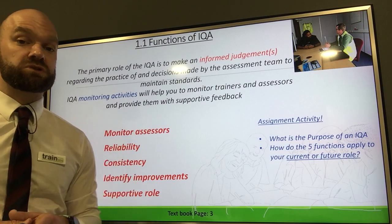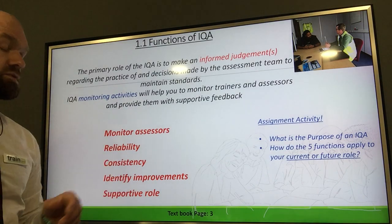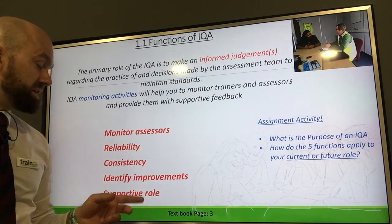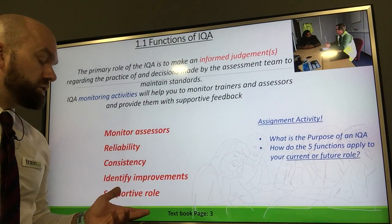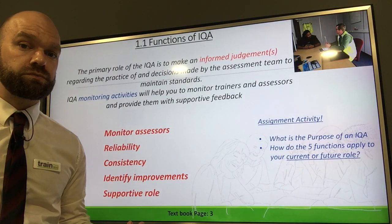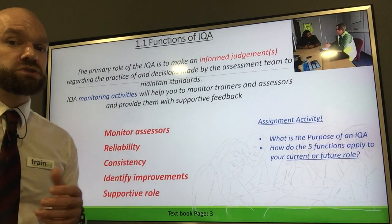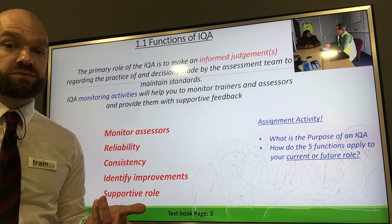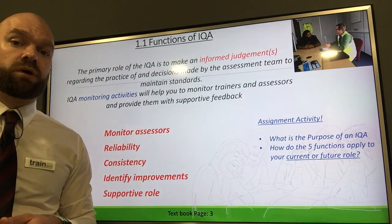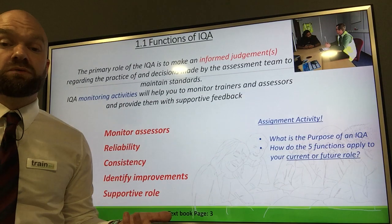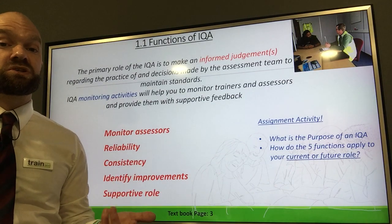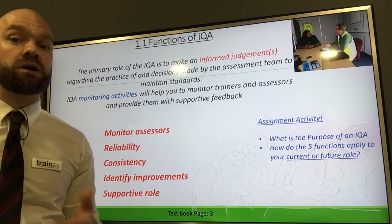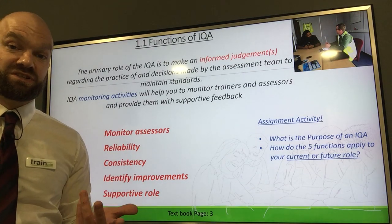There are five key functions of an IQA. The first is to monitor assessors, to promote reliability and consistency, to identify improvements, and to be a supportive role. If you have two assessors within the same room or same environment, they're going to have different opinions. As an IQA, you promote standardisation through materials, meetings, and agendas to ensure that a team of assessors are meeting in the middle and interpreting the criteria consistently.